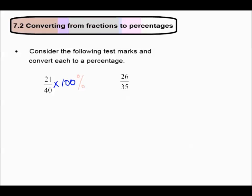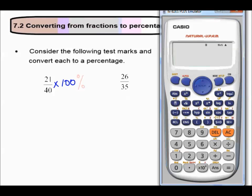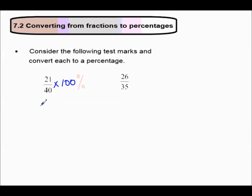The percentage sign does not form part of your calculation, so if we went to our calculator, we would have 21 over 40 multiplied by 100. I do not put the percentage sign in, and that equals 105 over 2, which is 52.5. So that equals 52.5 percent.